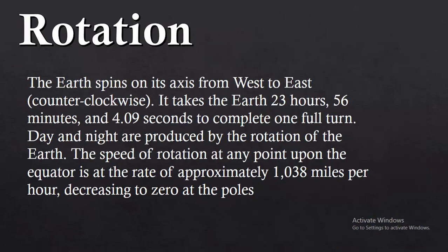Now moving on to our first type of movement, which is called rotation. The Earth spins on its axis from west to east — this is basically a counterclockwise direction. It takes the Earth 23 hours, 56 minutes and 4.9 seconds to complete one full turn. The day and night are produced by the rotation of the Earth. The speed of rotation at any point upon the equator is approximately 1,038 miles per hour, decreasing to zero at the poles.